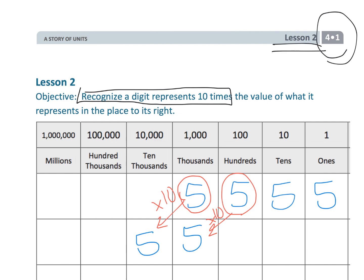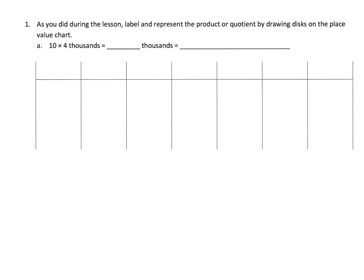So let's put this into practice. As you did during the lesson — this is going to happen with teachers in the classroom, and parents — hopefully this happened in the classroom today: label and represent the product or quotient by drawing disks on the place value chart. We know there's a beautiful shortcut that parents and teachers often know: just add a zero, or just chop off a zero. But the purpose of this lesson is to explain and demonstrate why that happens, and to give students a chance to develop some number sense.